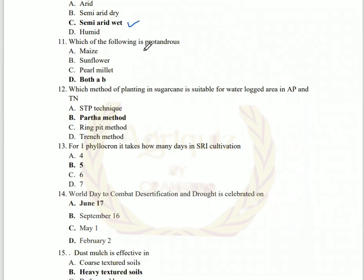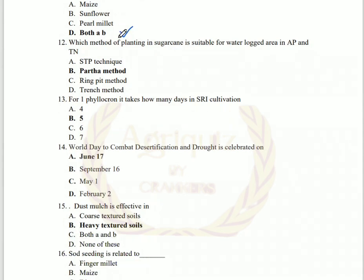The following is a protandrous crop: protandrous crops are maize and sunflower — the male flower comes first. The formula is protandrous. The Partha method of planting is suitable for waterlogged areas in Andhra Pradesh and Tamil Nadu. The answer is the Partha method.